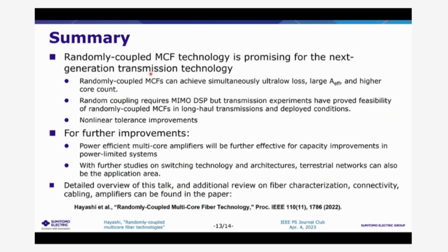So this is summary of my talk. Randomly coupled multi-core fiber technology is promising for the next generation transmission technologies. The randomly coupled MCFs can achieve simultaneously ultra low loss, large effective area and higher core count. And although the random coupling requires MIMO DSP, transmission experiments have proved the feasibility of randomly coupled MCFs in long-haul transmission and deployed condition. And for further improvement, power-efficient multicore amplifier will be effective for capacity improvement in power-limited systems. And with further study on the switching technologies and architecture, terrestrial networks can also be the application area.